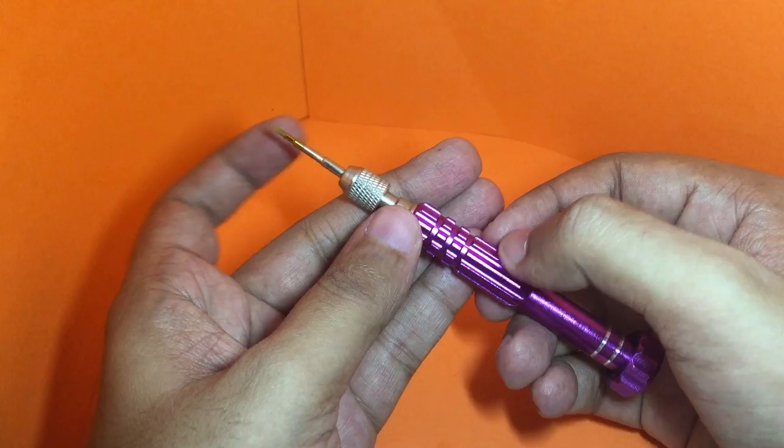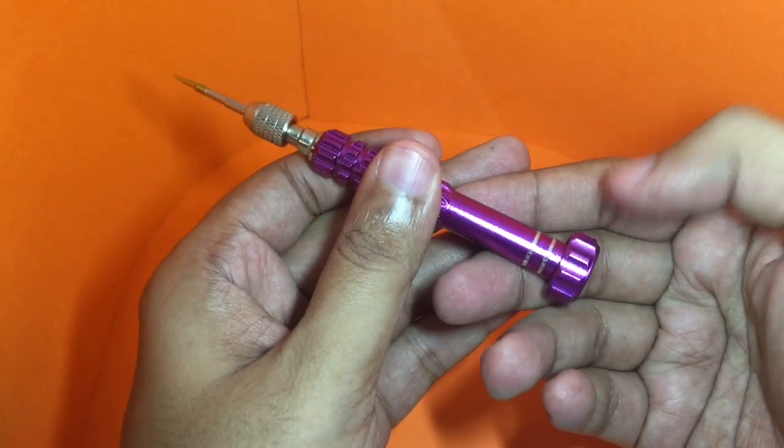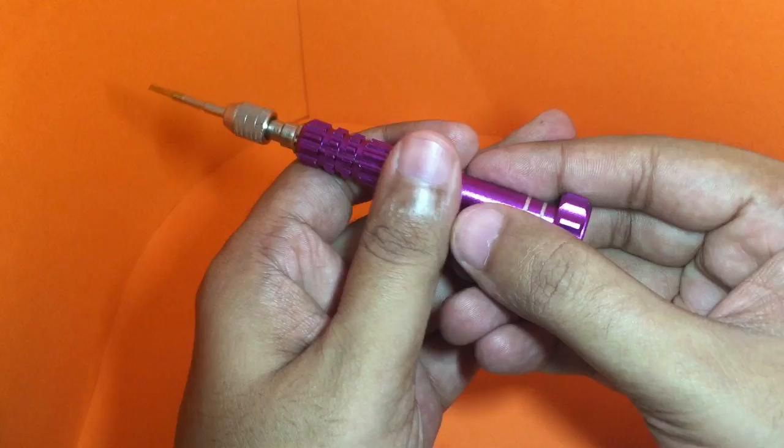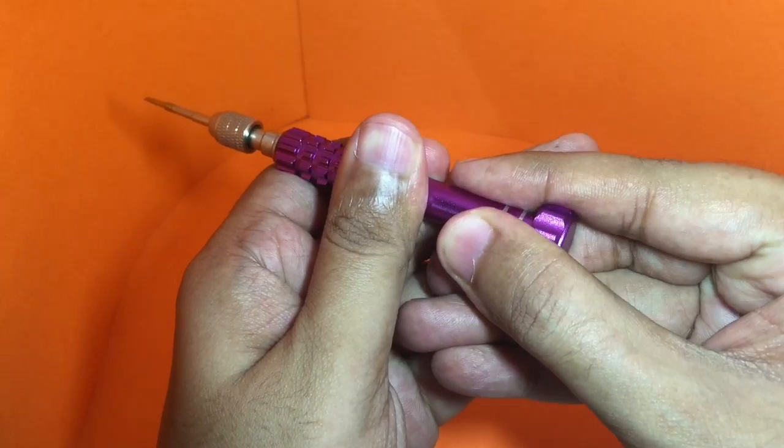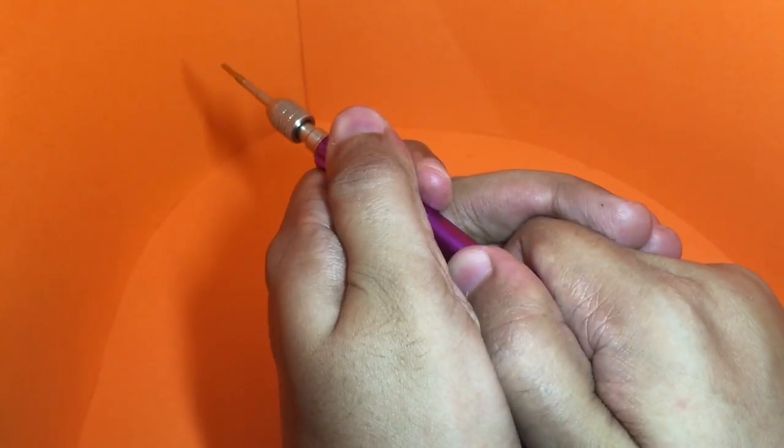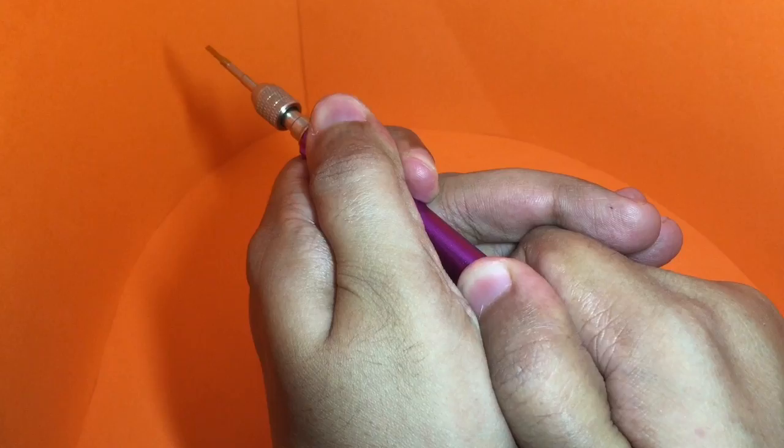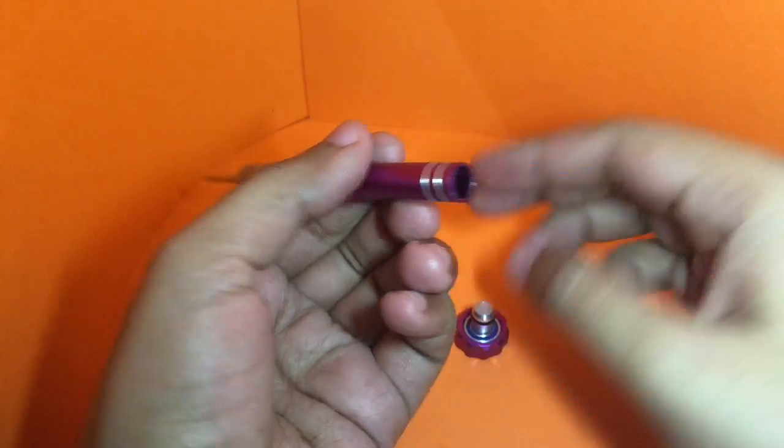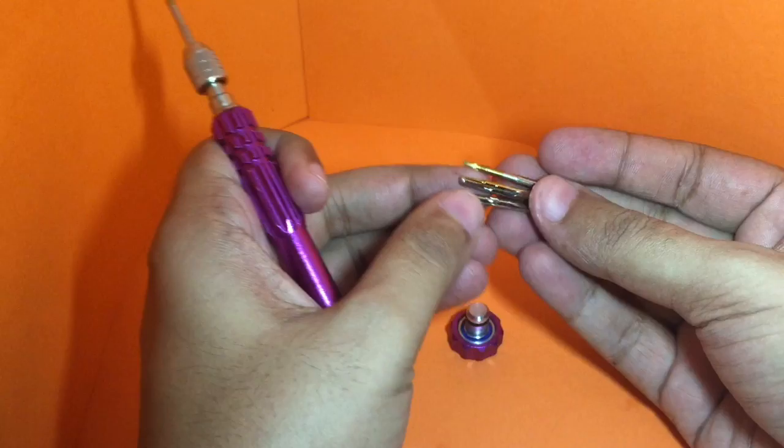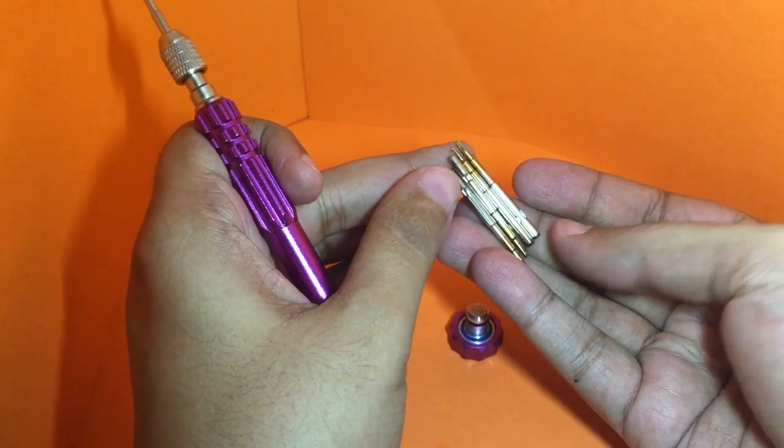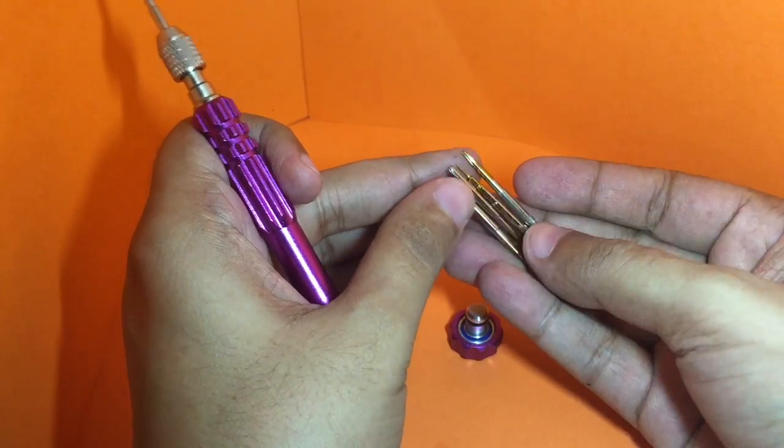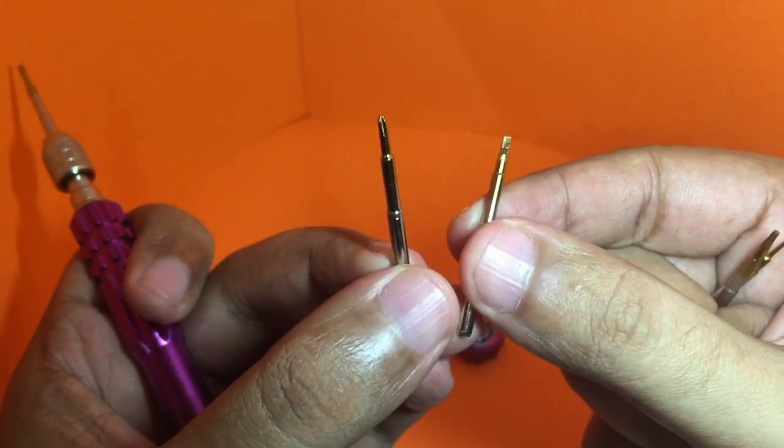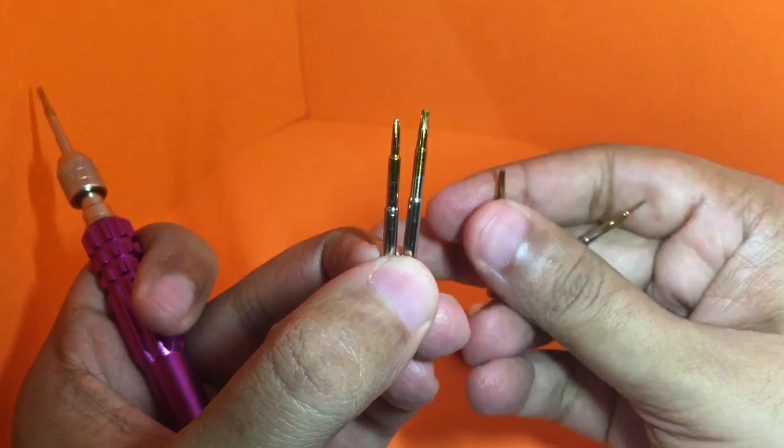It also has other bits that you can change, and they are stored inside. To get to them, all you need to do is pull the back off and you get four different heads that you can see.